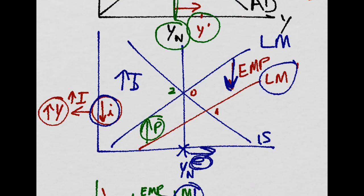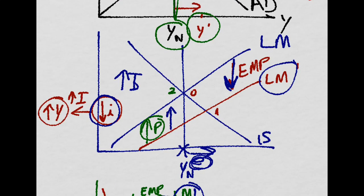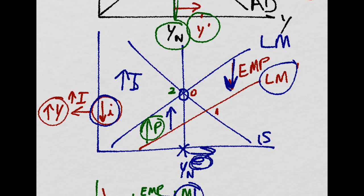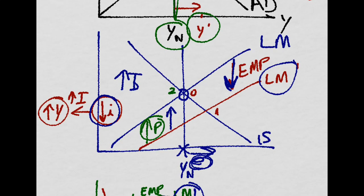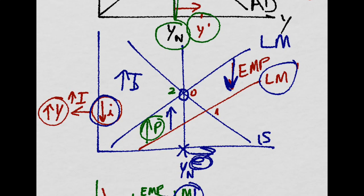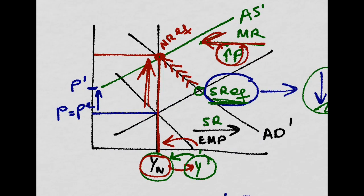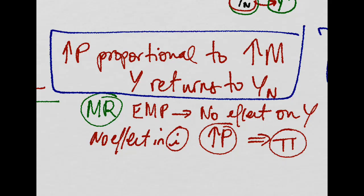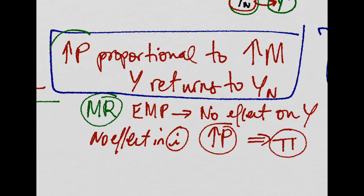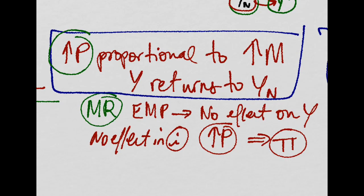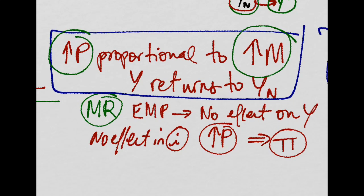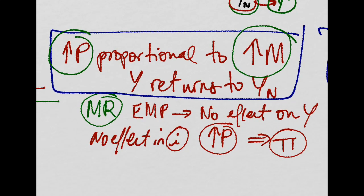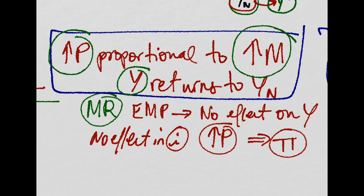The LM will shift up until it reaches its initial equilibrium, and the nominal interest rate will remain unchanged, and so will the output, which will stay at its natural level. And this is exactly what's shown at our ASAD graph. Prices increase proportionally with respect to the initial expansion of the money supply by the government, and this will make output return to the potential output level, the natural level of output, in the medium run.